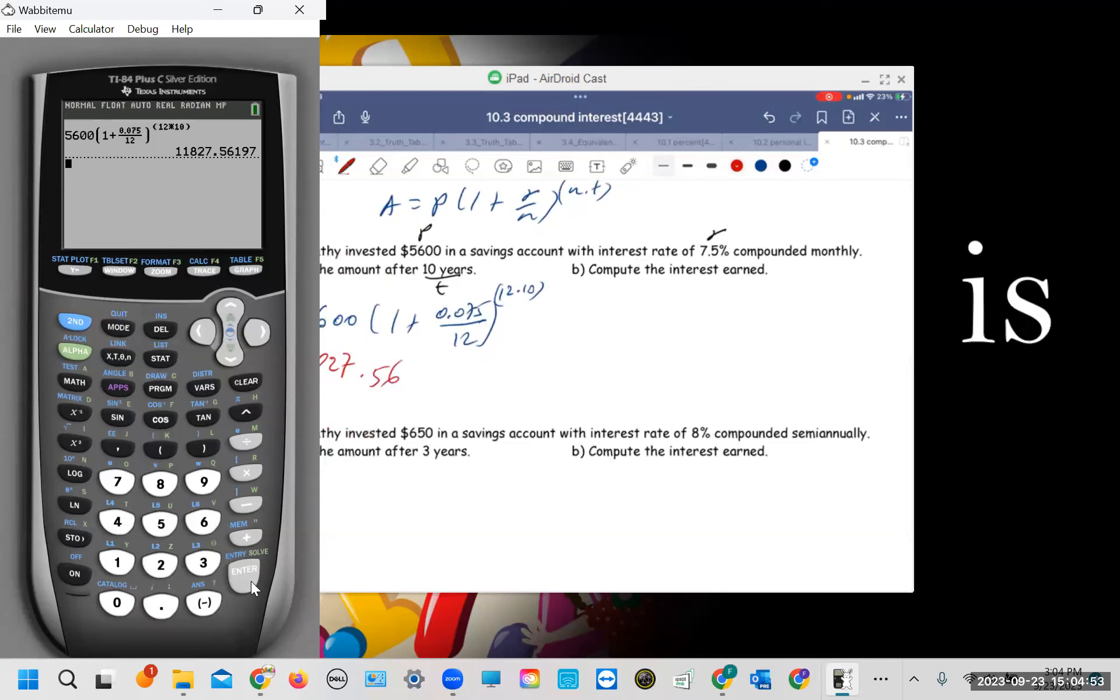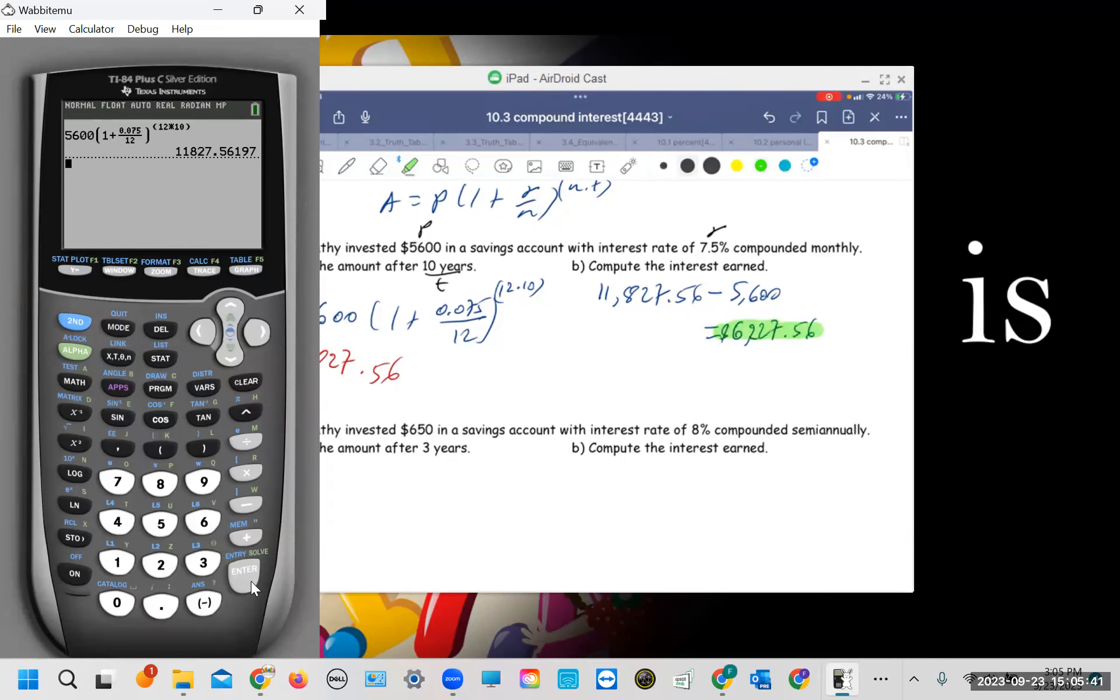So we have $11,827.56. So right here, let me bring this up. So for part B we have compound interest for this. So we have $11,827.56 minus $5,600. So we have $6,227.56. So this one we have this, okay?